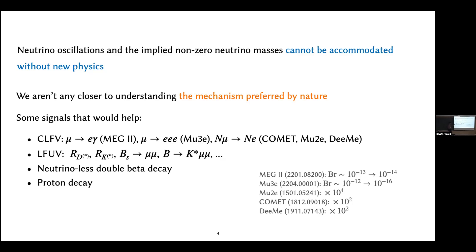Some would say we already have evidence of lepton flavor universality violation, though there is some rumor that those anomalies may be going away. As usual, we need more data to say anything for sure. It goes without saying that if we saw neutrinoless double beta decay, this would allow us to distinguish between Dirac and Majorana neutrino mass. I also include proton decay because it is a phenomenological signal that can probe very, very high scales — the scales most motivated in these model-building scenarios.